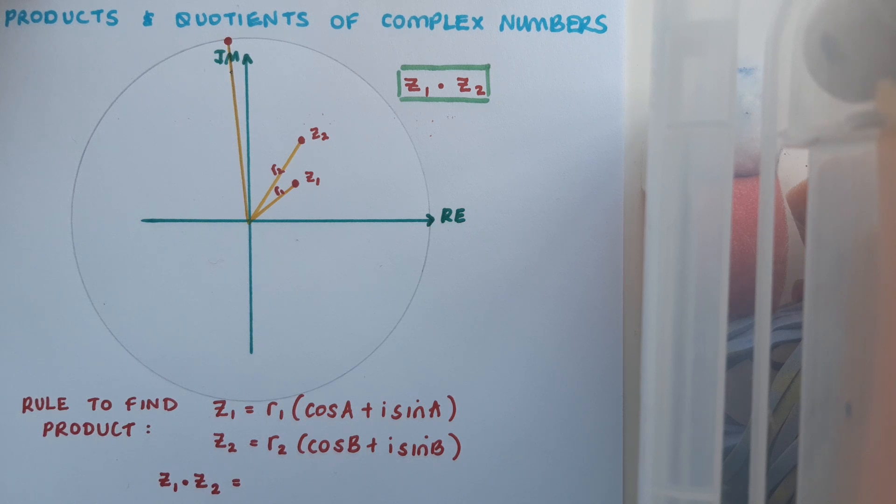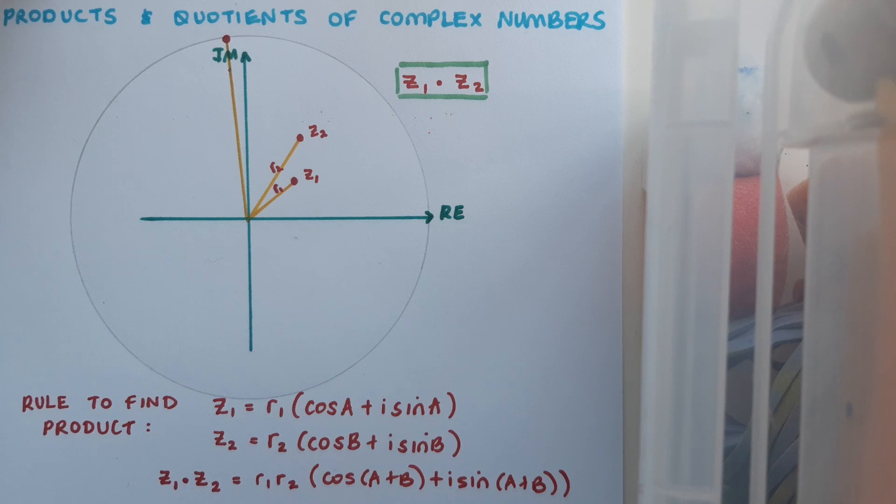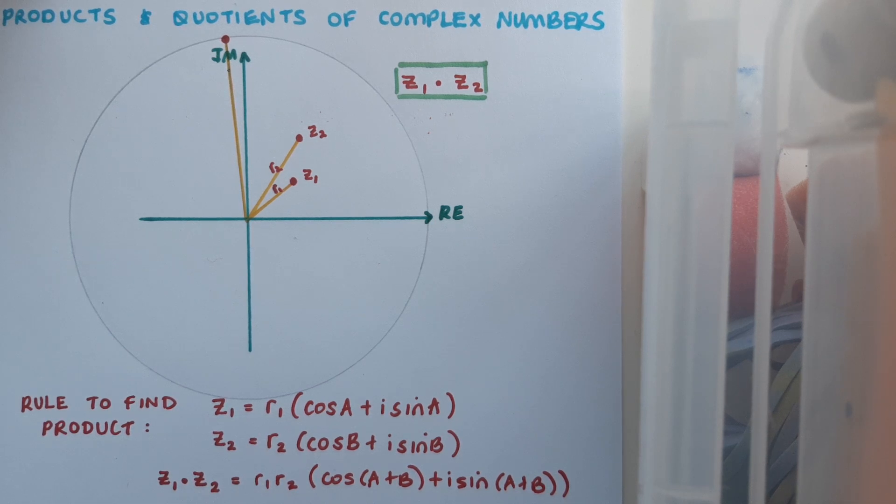If I'm given two complex numbers in polar form, it's really easy to do this. If I've got z1 written as r1(cos A + i sin A) and z2 as r2(cos B + i sin B) and I want to multiply them, just like I did in the diagram, all I have to do is multiply their moduli and add their angles. The rule is z1 times z2 equals r1r2(cos(A+B) + i sin(A+B)), which is much more efficient than all the multiplying out in Cartesian form.